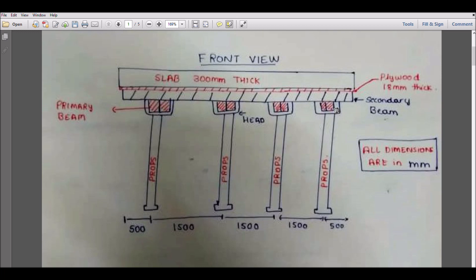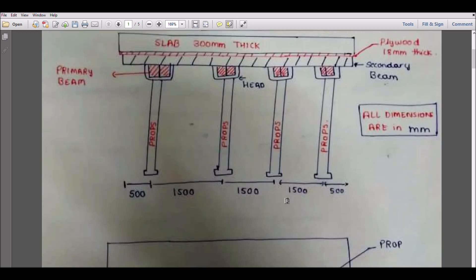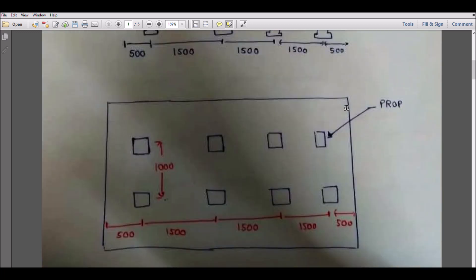Here you can see the primary beams supported by the props. Don't consider the dimensions right now, this is for basic understanding. After calculation, we will know the proper dimensions. If you see in the plan, I have considered the props like this.